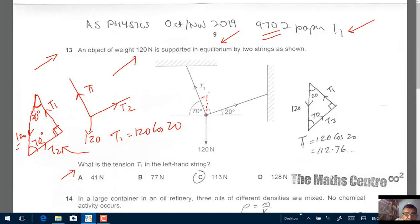Use the calculator, and you will get 112.76 Newton. So the important thing T1 is 120 cos 20, excuse me, 120 times cos 20 degrees. And use a calculator, you will get 112.76. Therefore, our correct response will be C, 113 Newton.